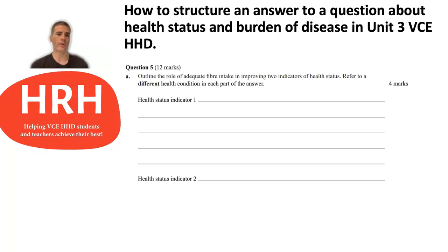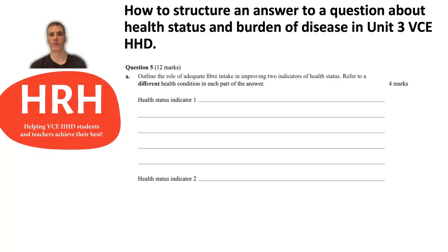For the first response, give an example of the role that fiber can play in the body — such as fiber can add bulk to feces and help food to pass through the digestive system, and therefore that might reduce your risk of developing colorectal cancer. Then in the second part of your answer, link it to a health status indicator. For example, individuals are less likely to develop colorectal cancer, less likely to die prematurely, and that can improve life expectancy.